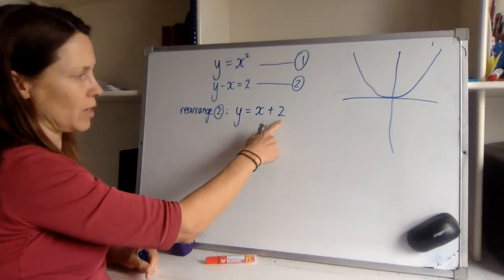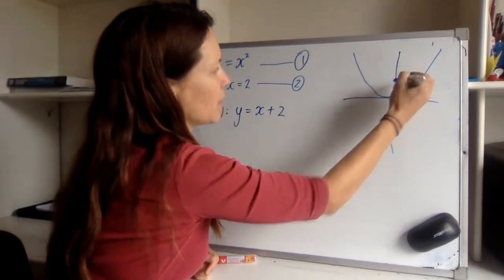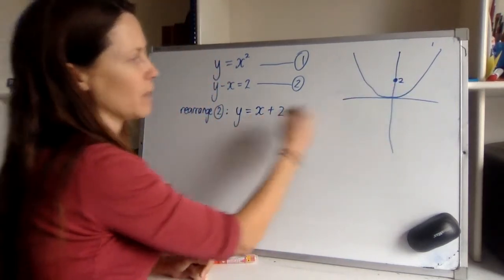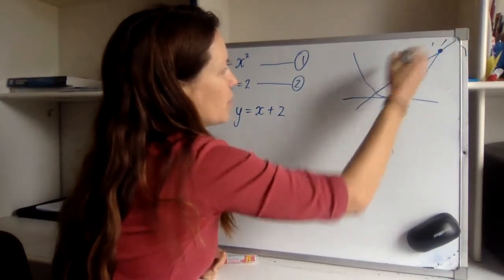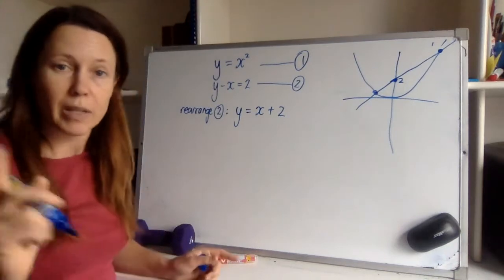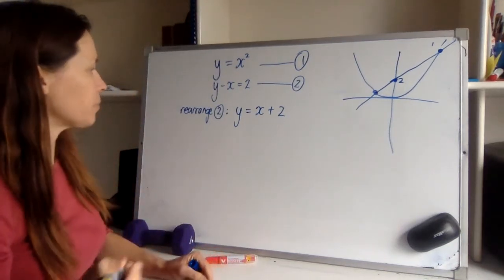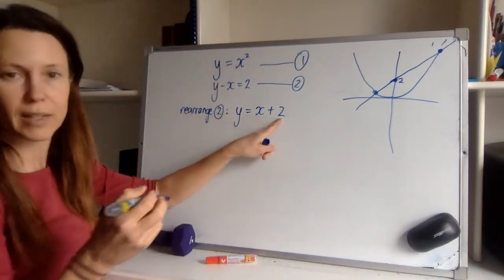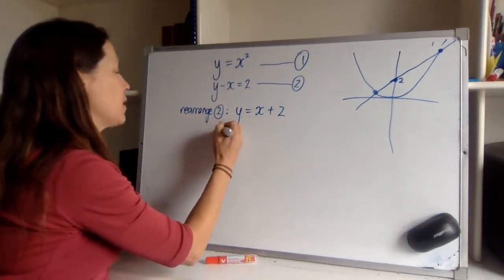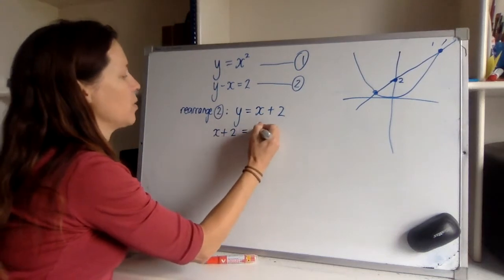Now we've got this. I know this straight line well, it goes through two on the y axis and it's got a gradient of one. So it's going across like this somehow. So it's going to cross my parabola twice, so I'm expecting two answers here. Now I can see that y is equal to x squared, but y is also equal to x plus two, so x plus two must be equal to x squared. Now I've got a quadratic equation.